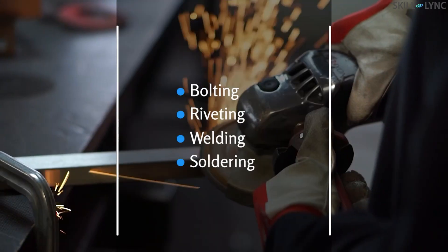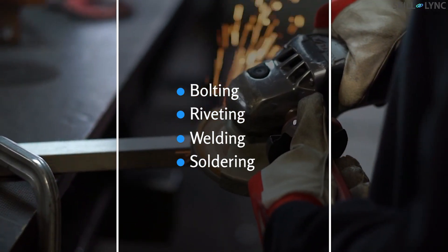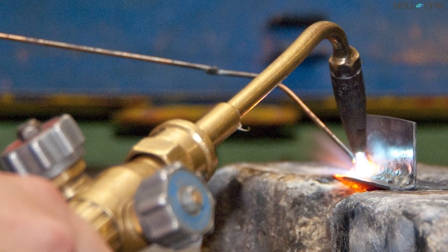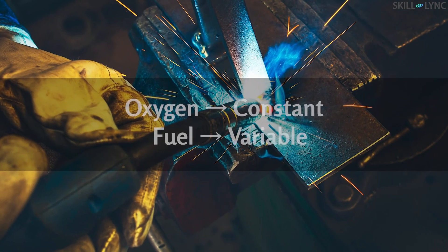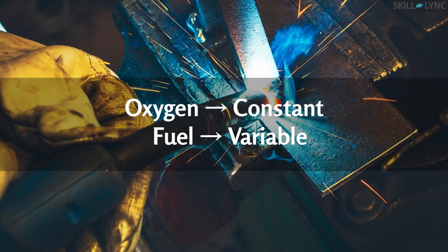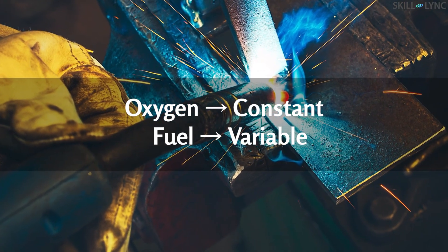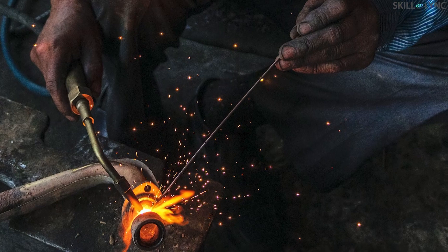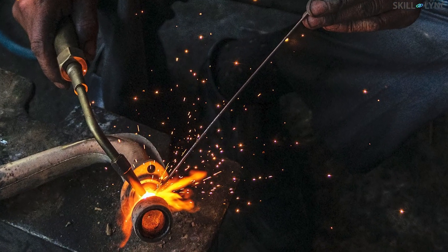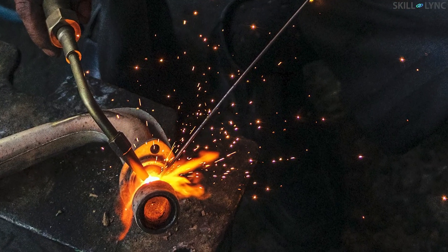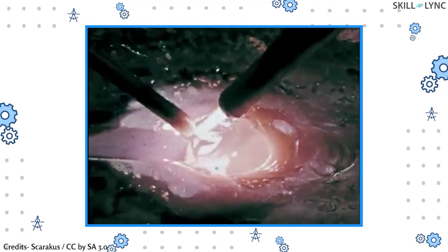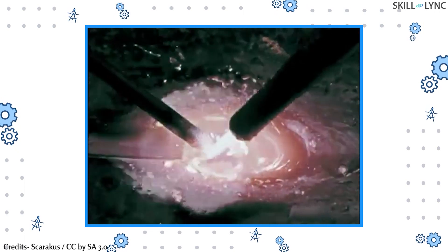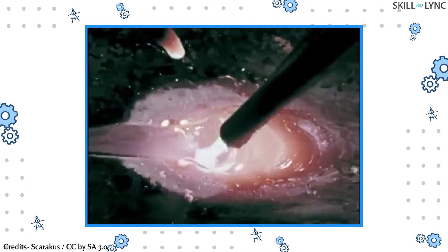Hey guys, welcome to the channel. There are many methods to join two metals together, and one among these is gas welding. Gas welding is also called oxygen-fuel welding, because oxygen is a constant component in any kind of gas welding operation. By burning fuel and oxygen, a strong gas flame is used to generate heat and raise the temperature of the metal. Due to the heat generated, the metal melts, and this molten metal is localized to the place where the metal is to be welded.